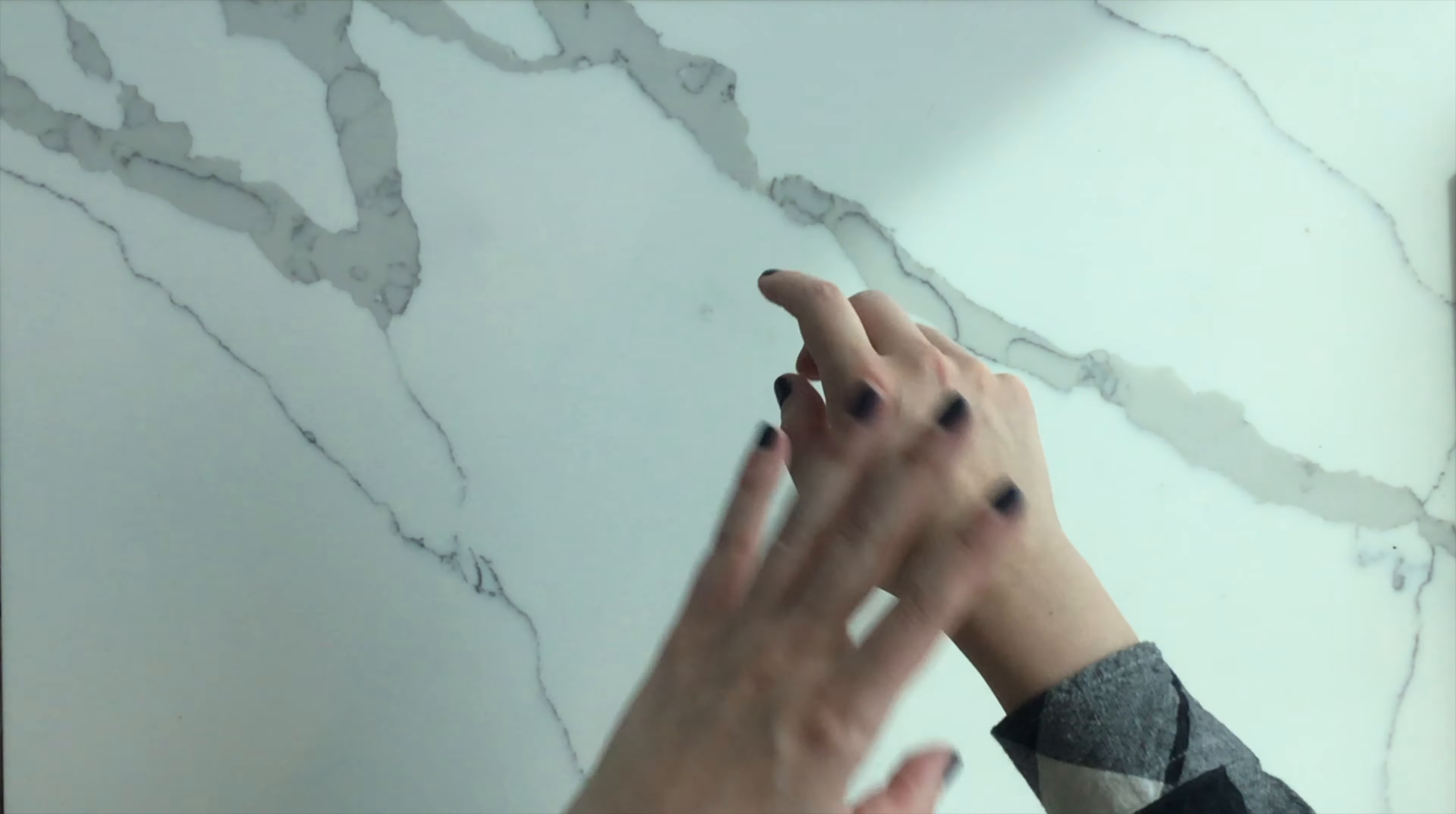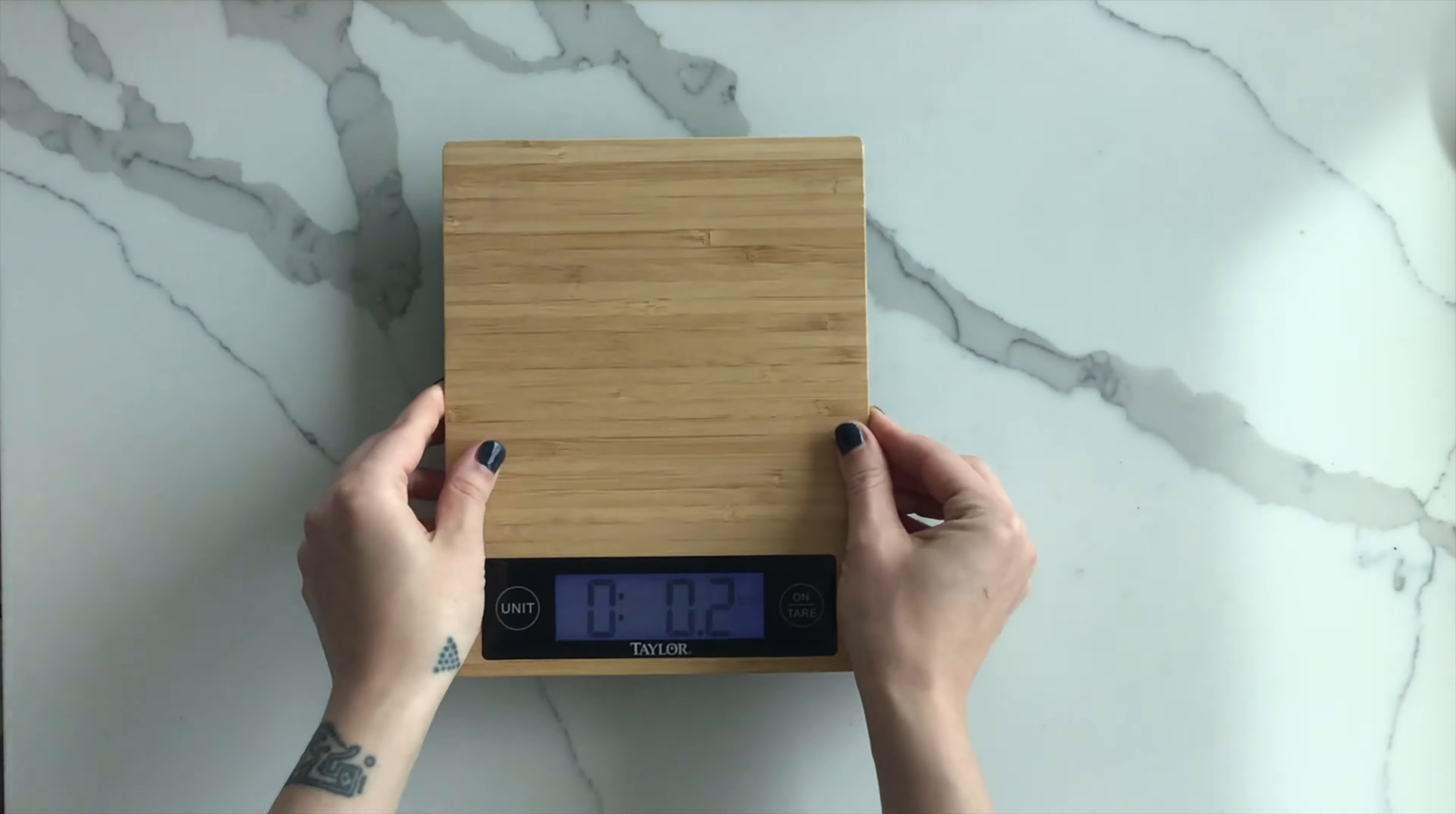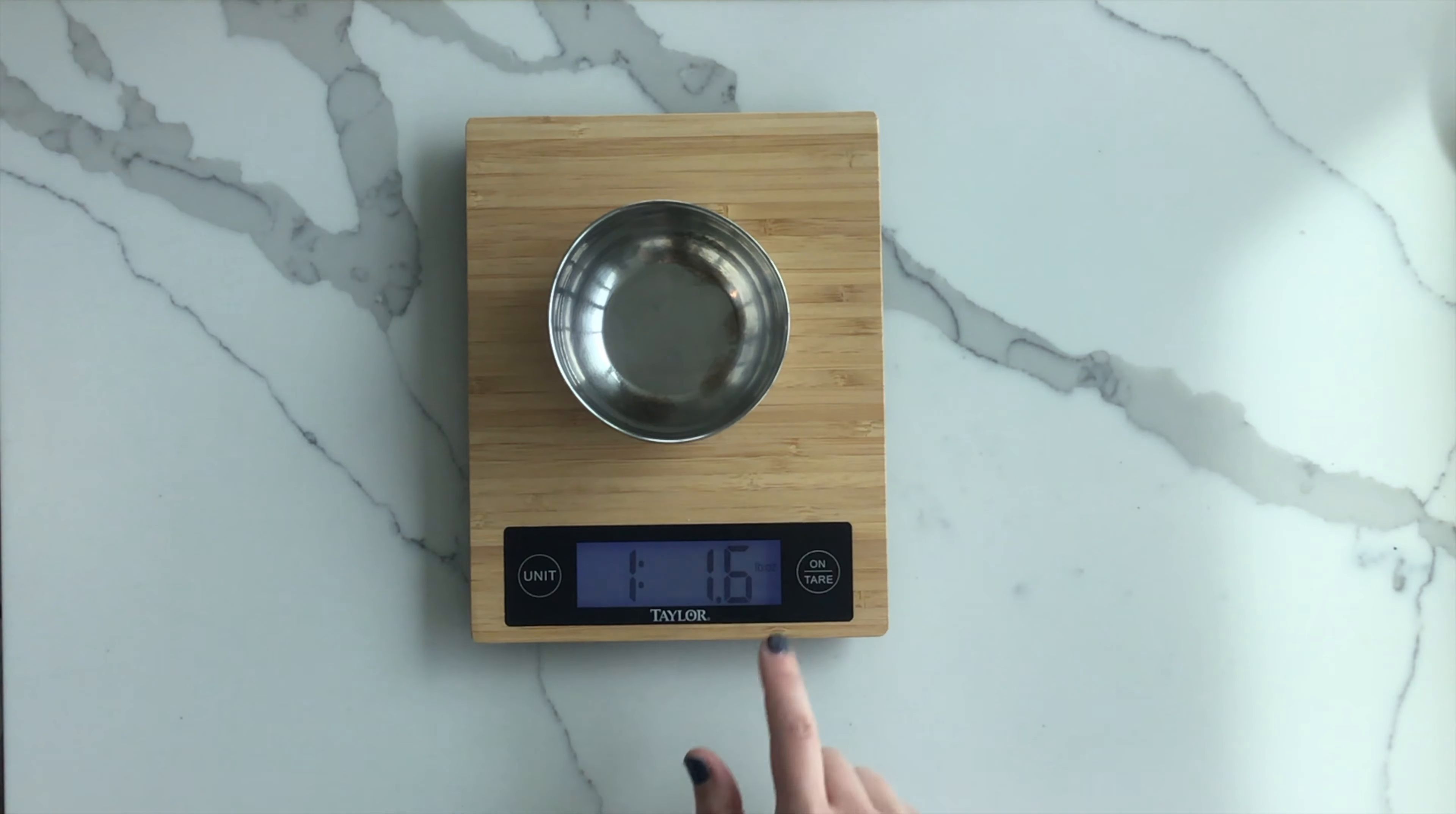Make sure you are wearing long sleeves and closed-toed shoes for your safety. When you measure ingredients, you'll measure them by weight, not volume. To measure, place the empty receptacle on the scale and push the tare button to set the weight to zero.